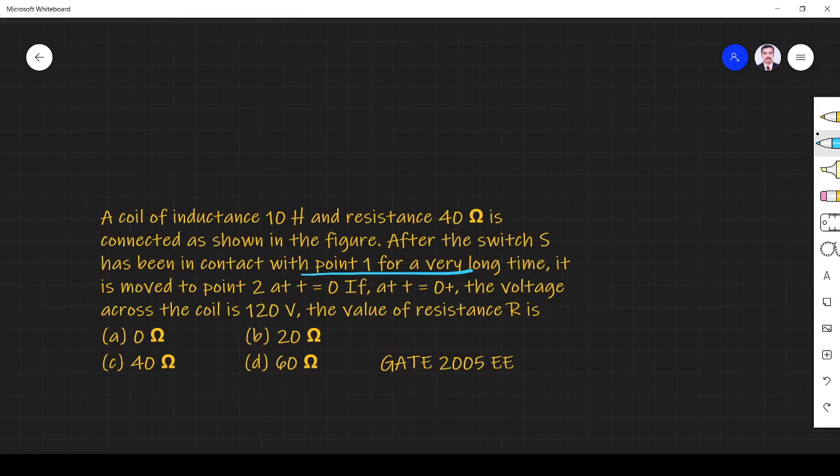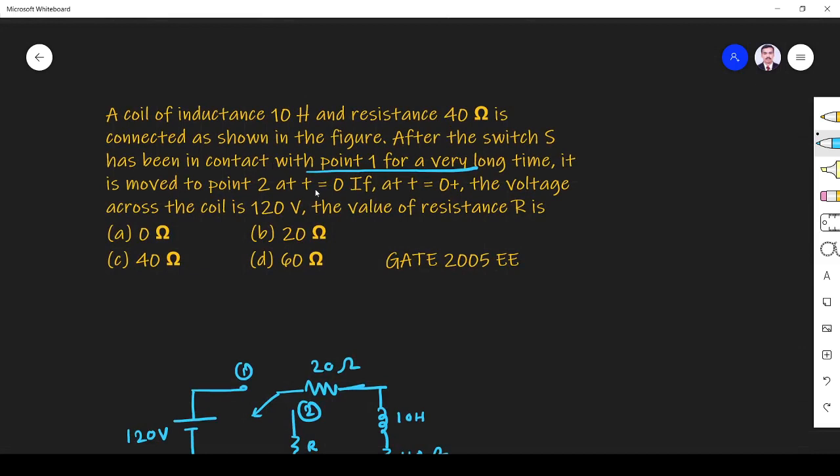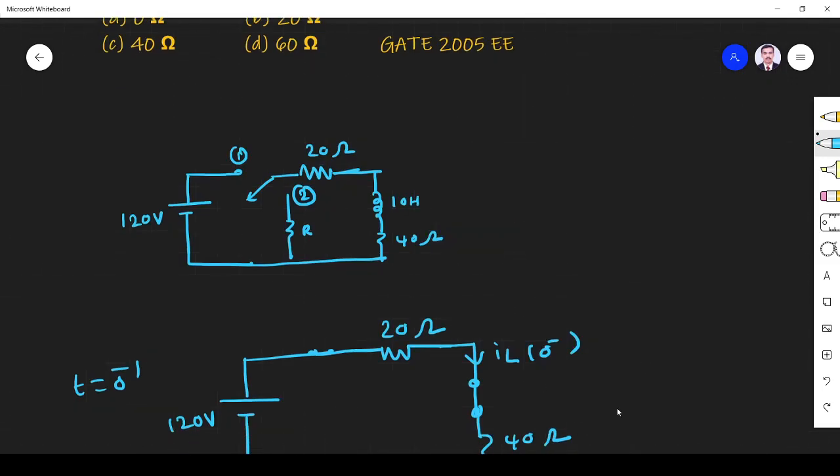At T is equal to 0, switch moved to position 2. It is moved to position 2 at T is equal to 0. At T is equal to 0 plus, again the voltage is 120 volts across the inductor.